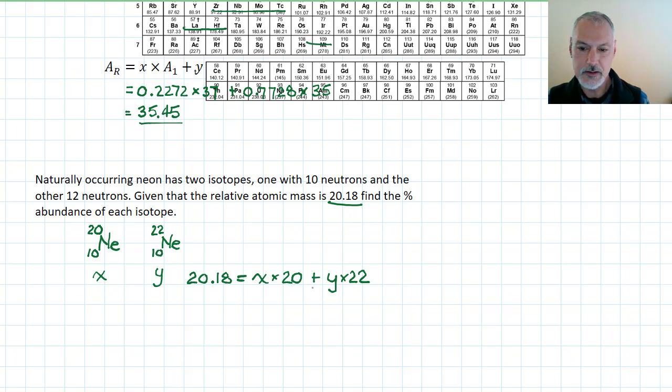Now, at first glance, this might look unsolvable because we don't know either x or y. But we do know that if we add these two fractions together, they must equal 1. That allows me to do some substitution. So I can replace y with 1 minus x. So I'm going to take this quantity and put it up in there. So, 20.18 is going to equal 20 times x plus now I have 1 minus x times 22.